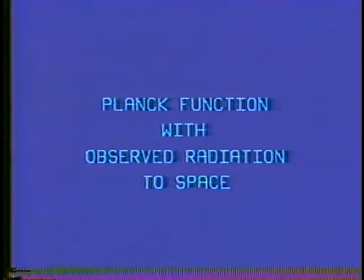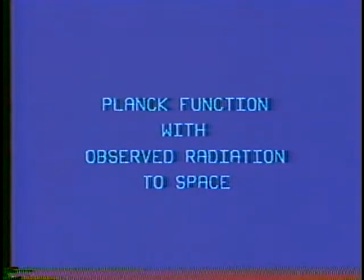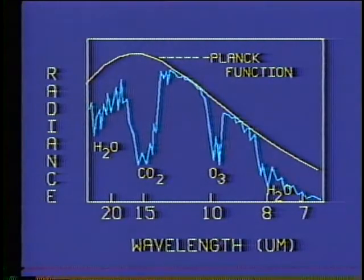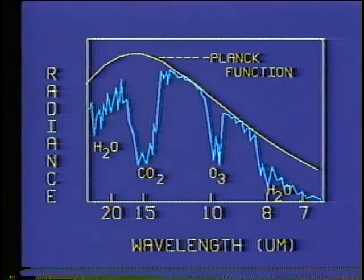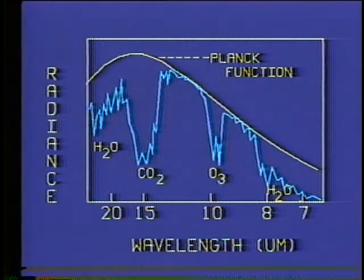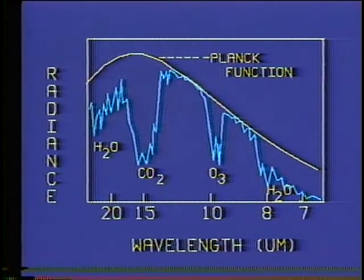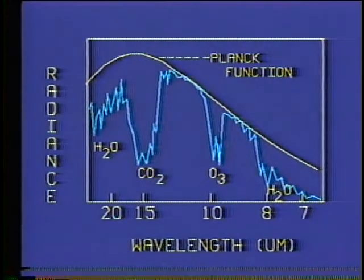Combining the theoretical radiance values of the Planck function with the absorption qualities of the atmosphere results in the distribution of observed radiation to space. The smooth curve is the spectral distribution of radiation for a black body given by the Planck function. The other curve is the observed radiation to space over this spectral interval. Where the observed radiation curve meets the Planck function curve, the atmospheric transmissivity is equal to 1, referred to as a window region. In regions with less observed radiation than the Planck function curve, radiation is absorbed by the atmospheric constituent indicated.